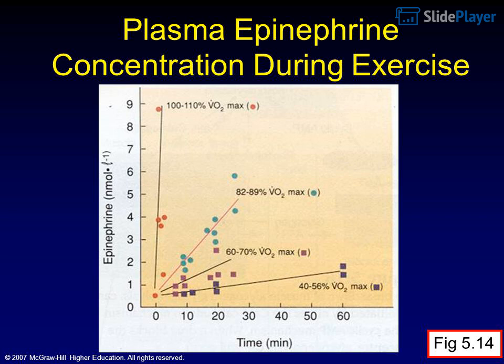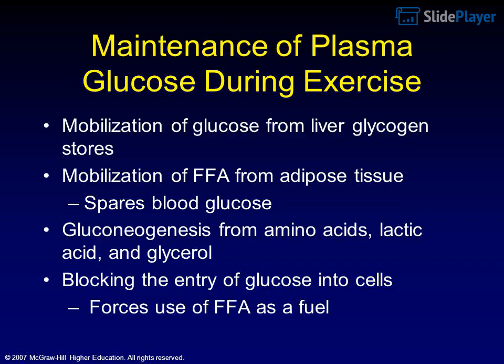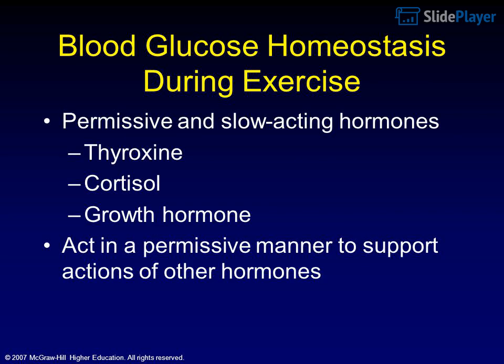Maintenance of plasma glucose during exercise involves: mobilization of glucose from liver glycogen stores, mobilization of free fatty acids (FFA) from adipose tissue to spare blood glucose, gluconeogenesis from amino acids, lactic acid, and glycerol, and blocking the entry of glucose into cells to force the use of FFA as fuel.